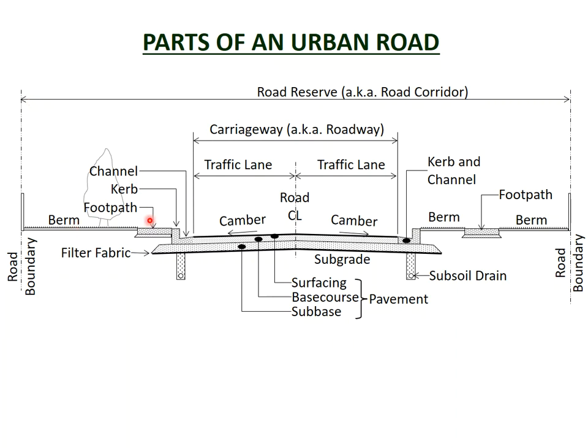The road reserve extends from the front boundary of the properties on either side of the road. For a two-lane road — that is, one lane in each direction — the road reserve is typically 16 to 20 metres wide. For larger roads, such as arterial roads and motorways, which have more lanes, they need a wider road reserve to accommodate the extra lanes.